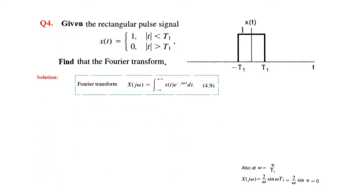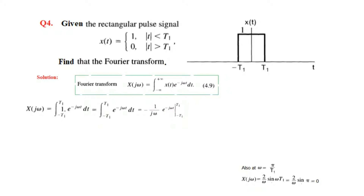We use the formula for the Fourier transform. Now the limit — because the signal only exists from minus t1 to plus t1 — we can change the integral limits to minus t1 to plus t1, and the value of the signal is 1 within those limits. We know at all other places the signal is 0. So this becomes the integral: 1 over jω, and the result is 1 over jω times e raised to the power minus jωt, evaluated at the two limits.